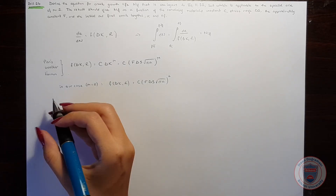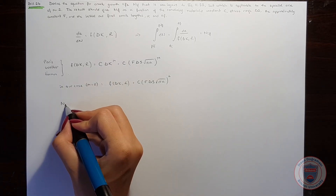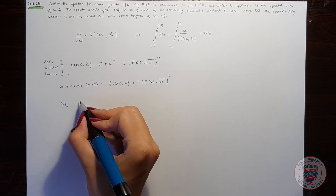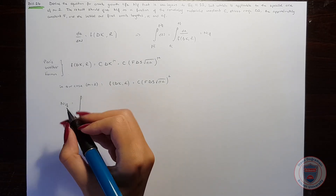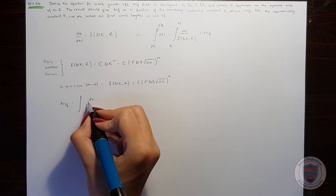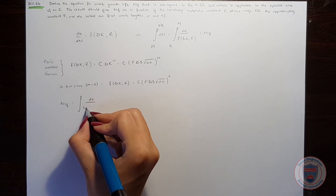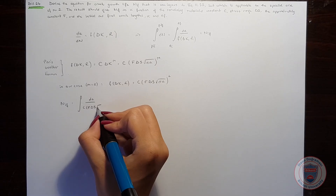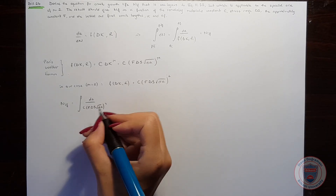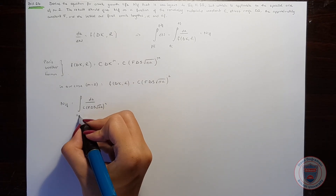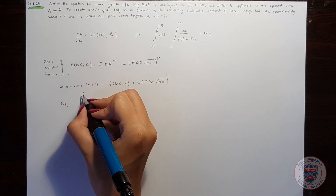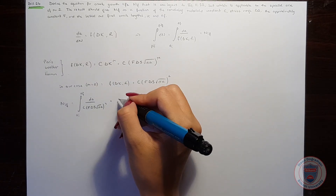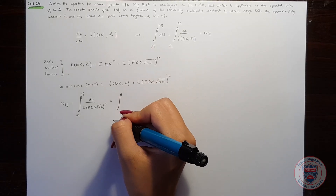So the crack growth life will be equal to the integral of dA over C times (F times delta S)^2 times pi A, from the initial crack length to the final crack length. Making some arrangements, this becomes the integral of dA over C times F squared times delta S squared times pi times A.